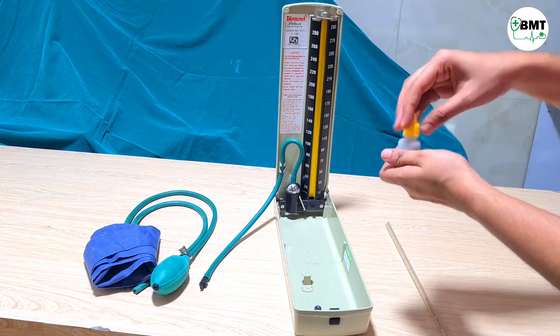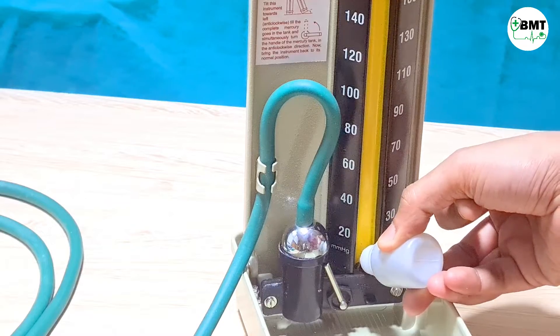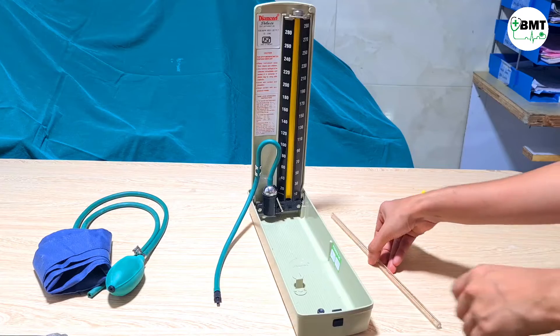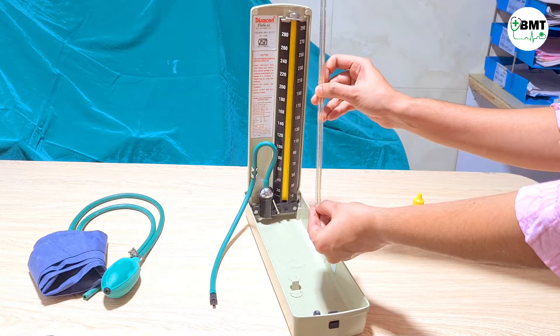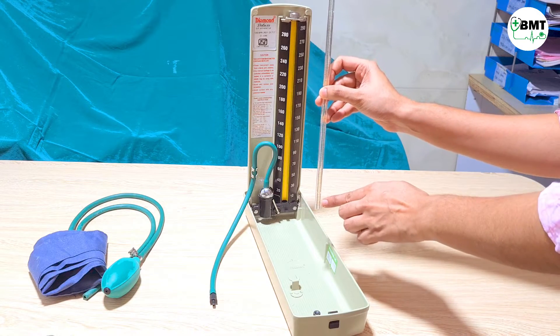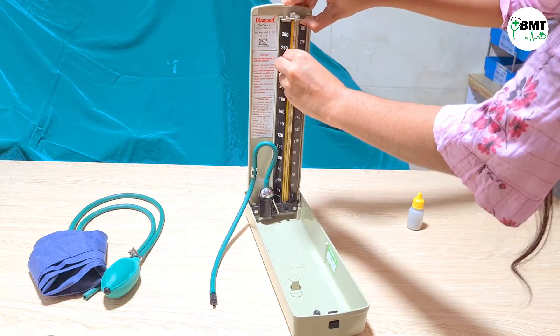Now take the mercury and fill it. Once filled, now place this tube and check whether it is reaching zero or not. While placing this, this number should be facing towards front. Place it, pull it up.